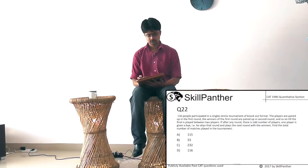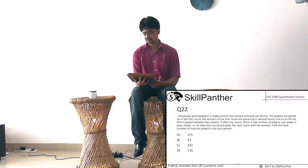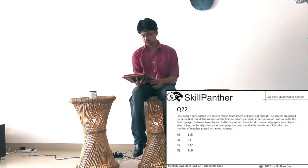Question 22. 116 people participated in a singles tennis tournament of knockout format. The players are paired up in the first round, the winners of the first round are paired up in the second round and so on till the final is played between two players. If after any round there is an odd number of players, one player is given a bye, that is he skips that round and plays the next round with the winners. Find the total number of matches played in the tournament when starting with 116 people.